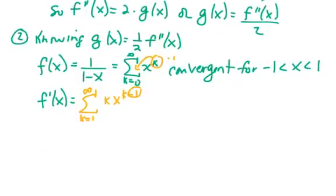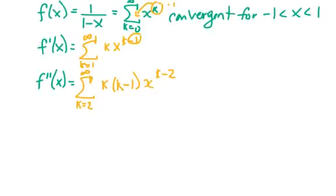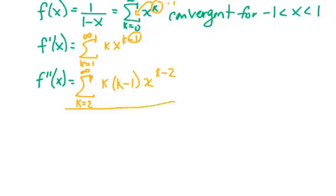For the second derivative, manipulating the power series directly, we get k times k minus 1 times x to the k minus 2. Since I have subtracted 2 for the second derivative, I start the index at 2. So f double prime, in terms of a power series, is the sum from k equals 2 to infinity of k times k minus 1 times x to the k minus 2.